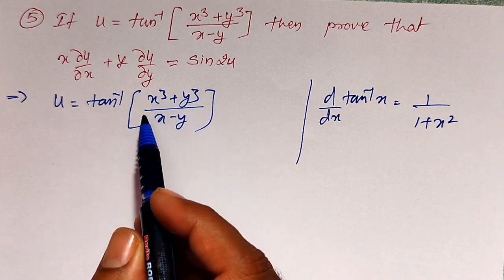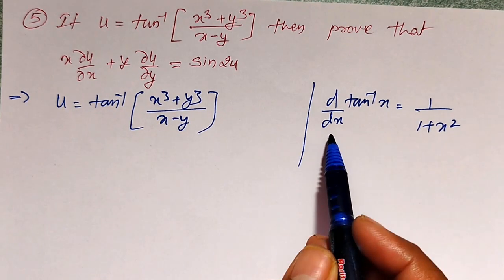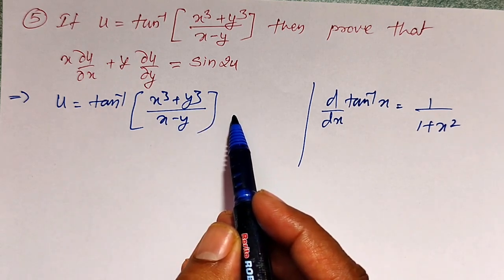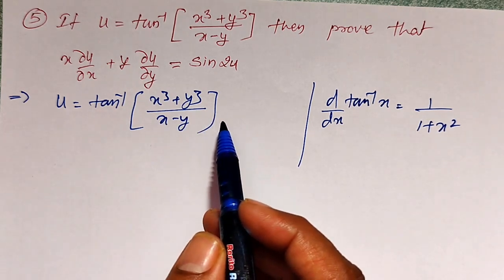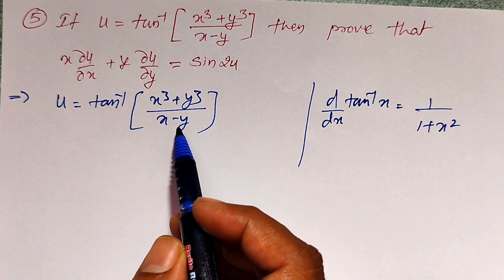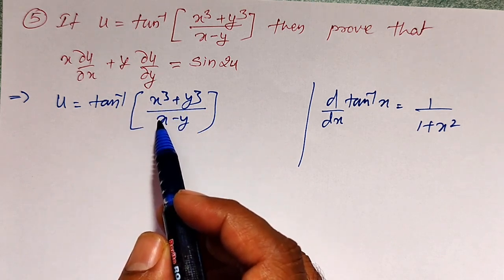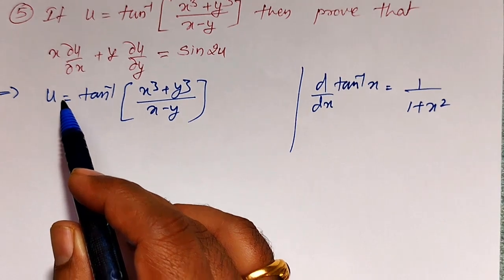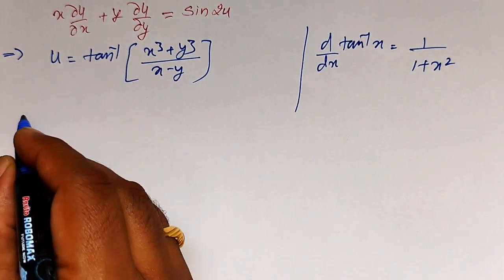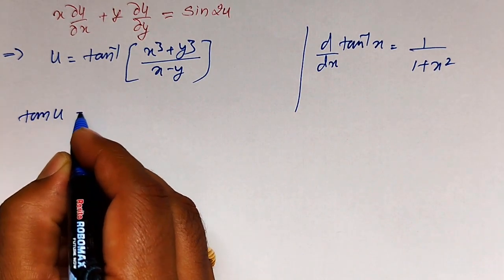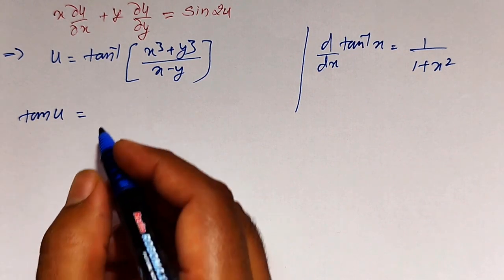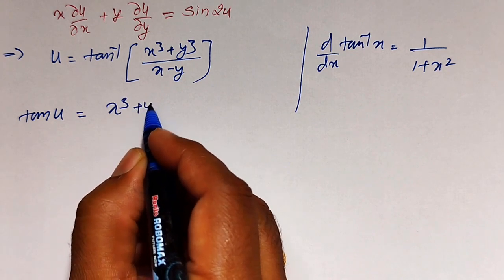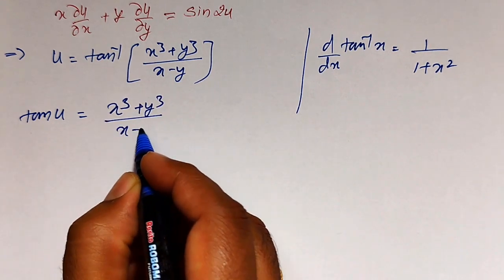I have to use implicit function or composite function type chain rule, then it will become very difficult to evaluate. Ordinary derivative is simple, but applying the chain rule and quotient rule makes it complex. To avoid that, what I can do is write it as tan u equal to x cube plus y cube divided by x minus y.